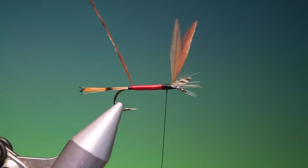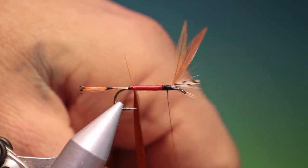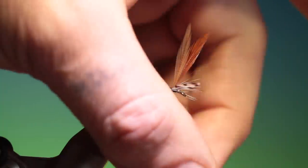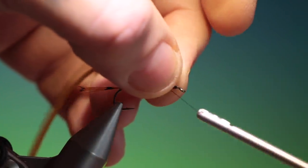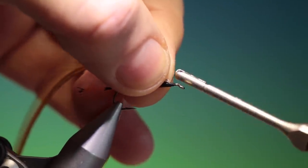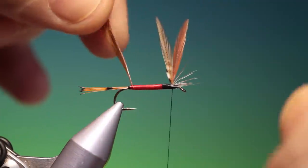A little thread there, get rid of that. And we can go up here. Very good. Now we need our hackle. So we can move this tie-in thread first, all the way forward. Good.